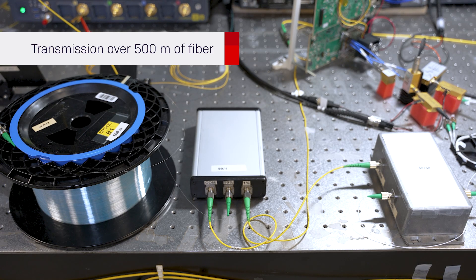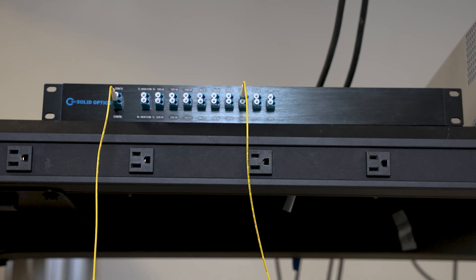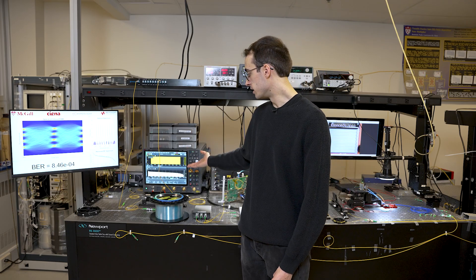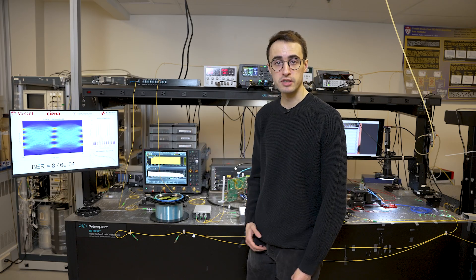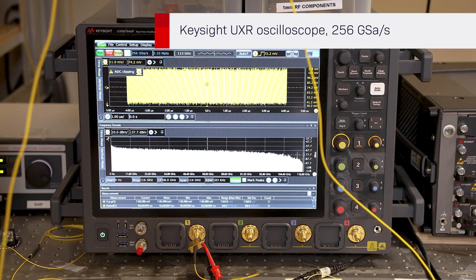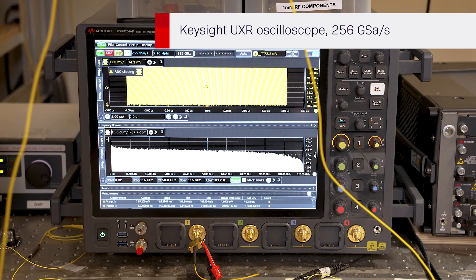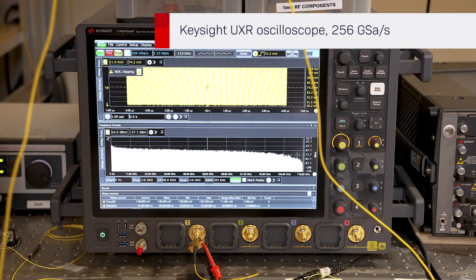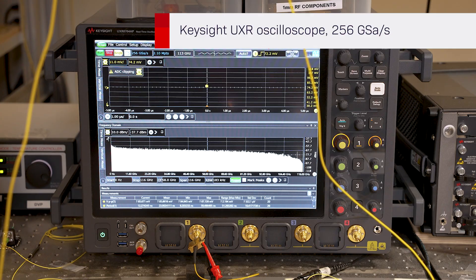Next, the optical signal is amplified by a semiconductor optical amplifier. The channel of interest is selected using an optical demultiplexer. Finally, the signal is converted into an electrical signal and sampled by a Keysight high-performance UXR 113 gigahertz oscilloscope with a sampling rate of 256 gigasample per second.